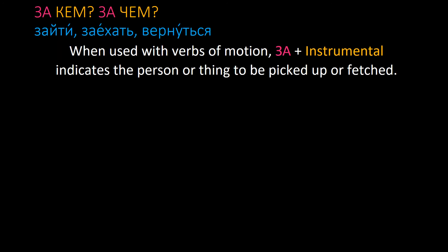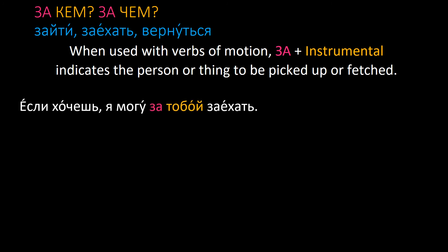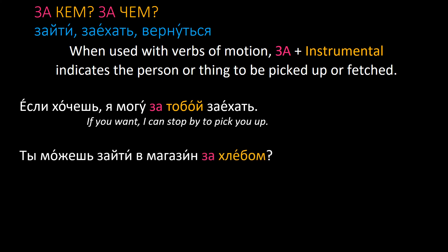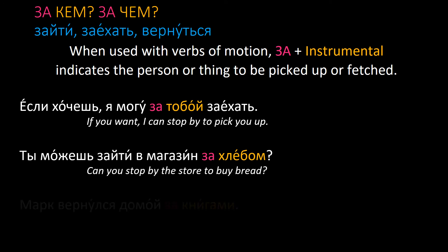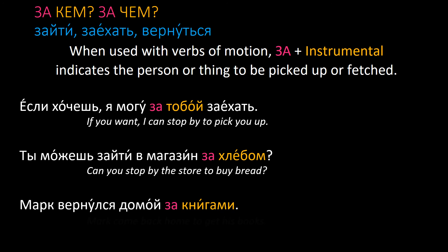Similarly, the preposition за means behind, but with verbs of motion such as зайти, заехать, вернуться, за кем / за чем indicates the person or thing to be picked up: если хочешь, я могу за тобой заехать — if you want, I can pick you up. Ты можешь зайти в магазин за хлебом. Марк вернулся домой за книгами.